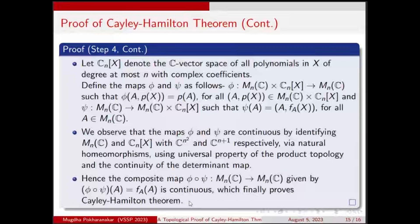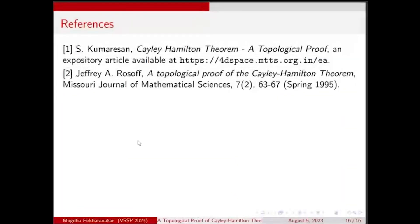References used: Homeroy Tensor's article on a topological proof of the Cayley-Hamilton theorem, which gives the outline of the proof; and a second reference for writing the map A ↦ F_A(A) as a composition of two maps. Thank you. If there are any questions we can discuss in the Q&A session.